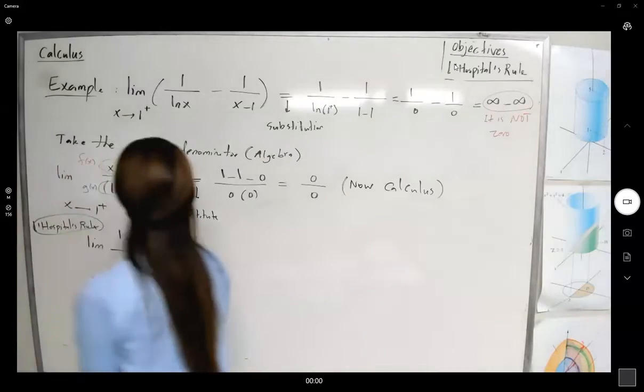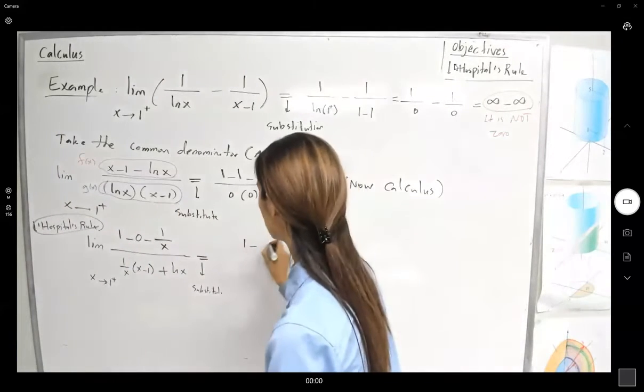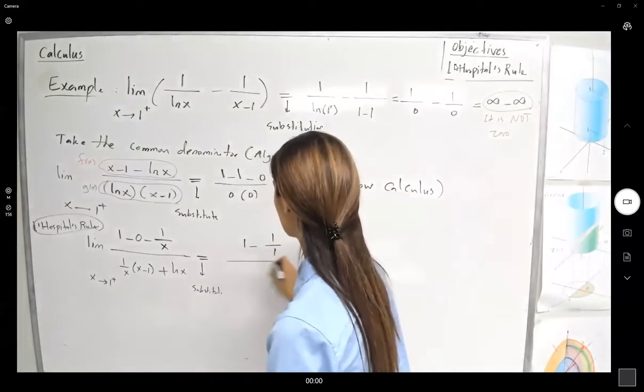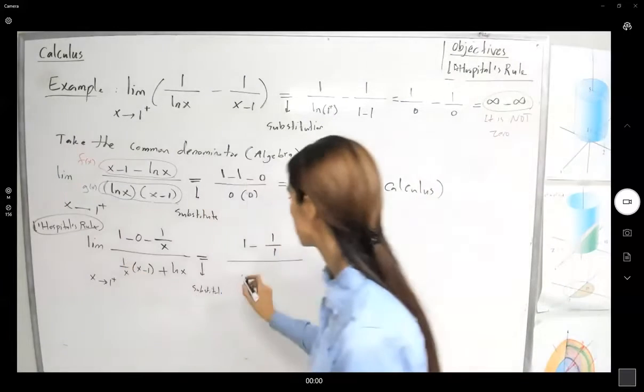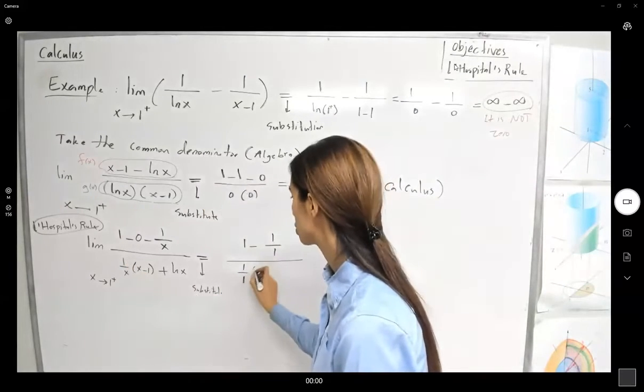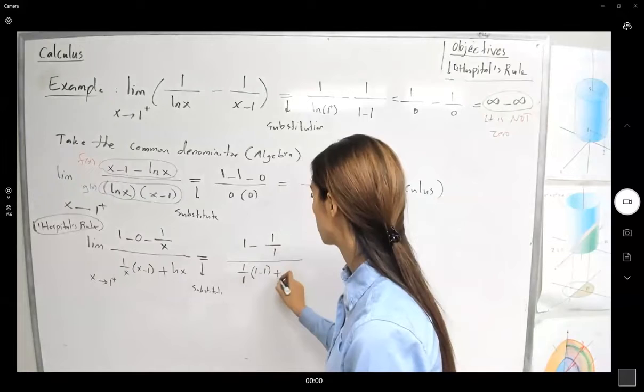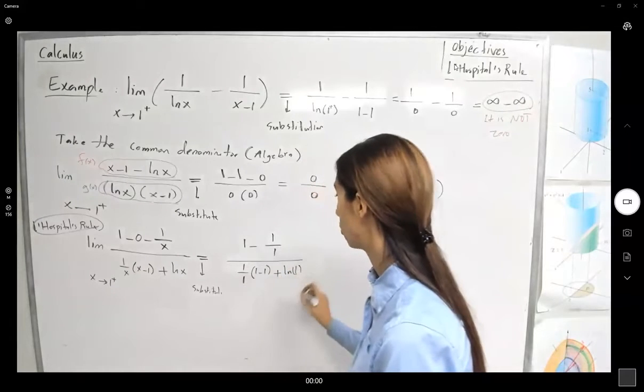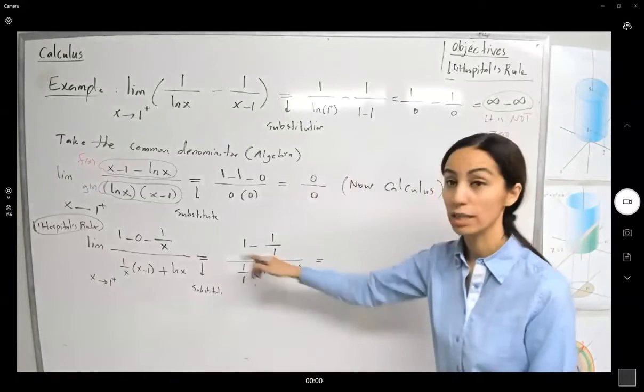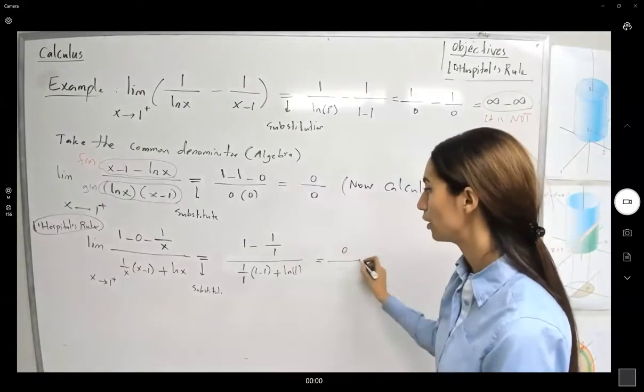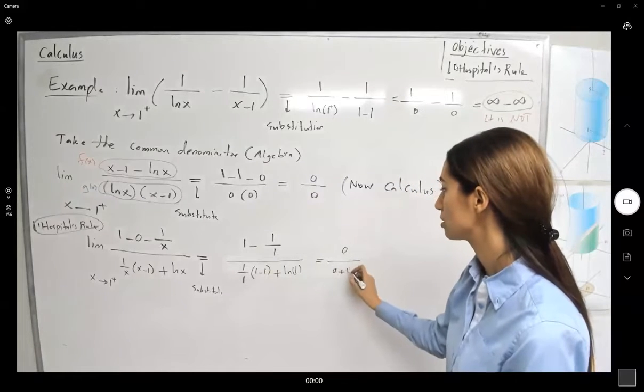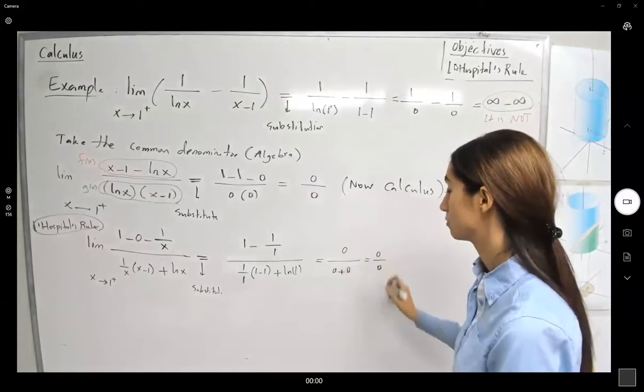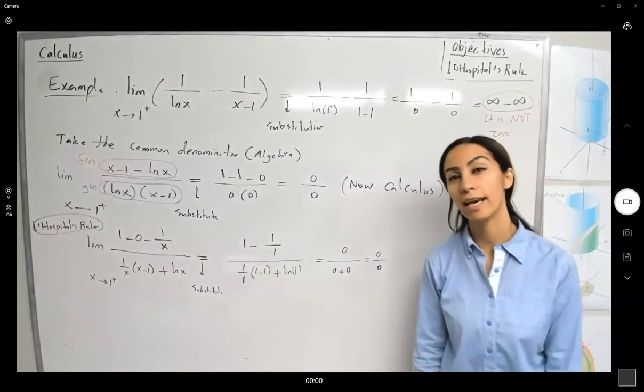Substitute 1. What do you get? You get 1 minus 1 over 1 divided by, here you have 1 over x, which is 1 over 1 times 1 minus 1 plus ln of 1. What do you get? You get 0 divided by, very well, 0 times 0, which is 0. We have 0 over 0 again.